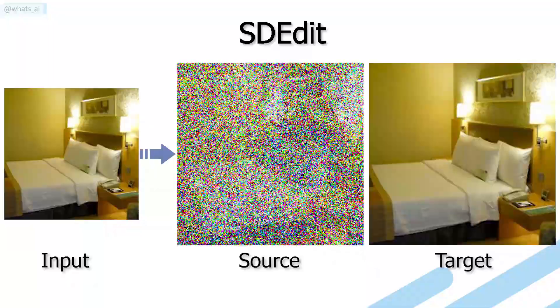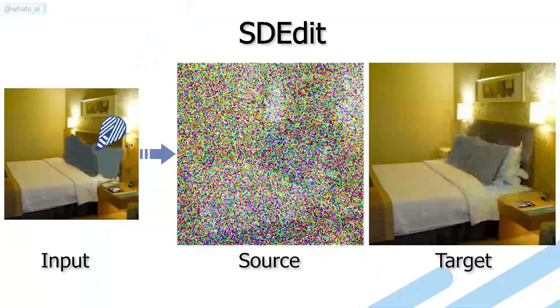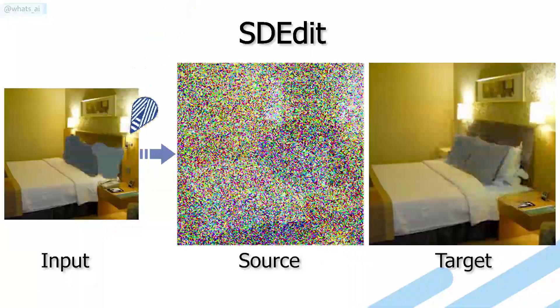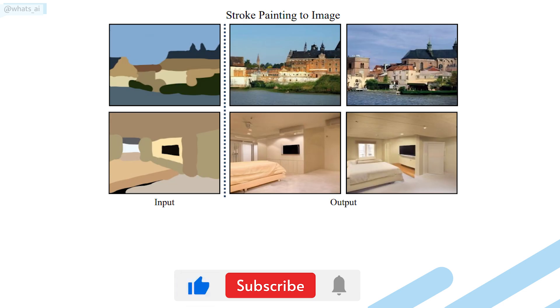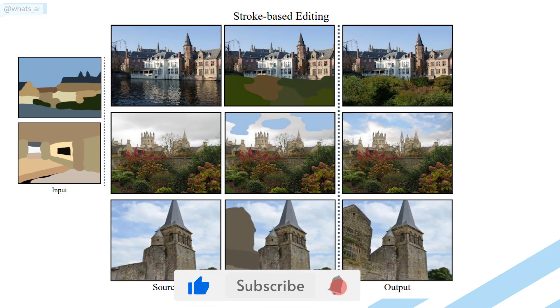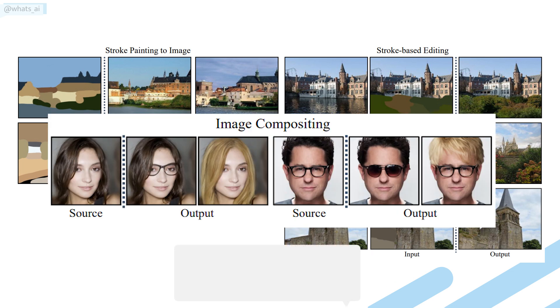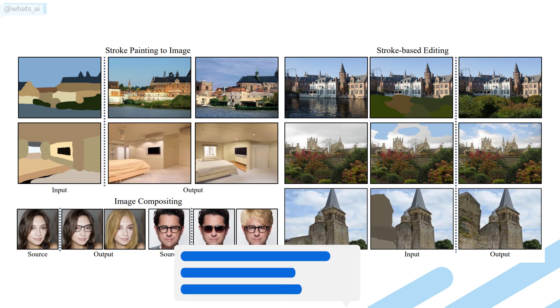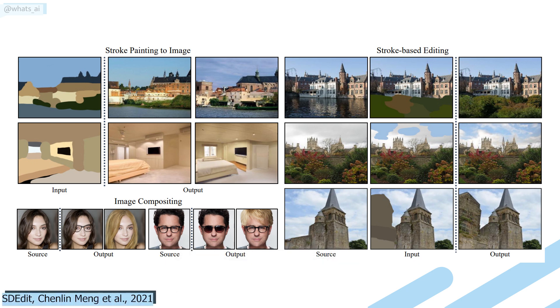In the case of a simple user edit, they carefully designed the architecture to only generate the edited part and not recreate the whole picture. This enables applications such as conditional image generation, stroke-based image synthesis and editing, image inpainting, colorization, and other inverse problems to be solved using a single unconditional model without retraining it.